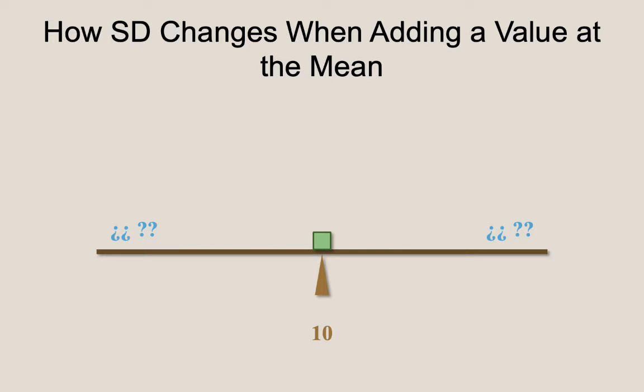Thus, the standard deviation decreases when we add a value that equals the mean. This is true for however many values we add that exactly equal the mean.